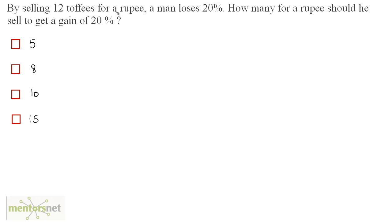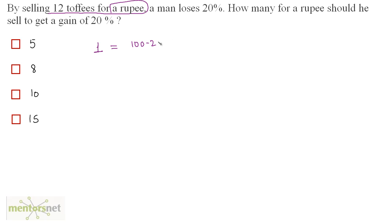By selling 12 toffees for 1 rupee, a man loses 20%. How many for a rupee should he sell to get a gain of 20%? The selling price of 12 toffees is 1 rupee. Since he loses 20%, the selling price equals (100 − 20)% of cost price, so 80/100 times the cost price. This is equation 1.